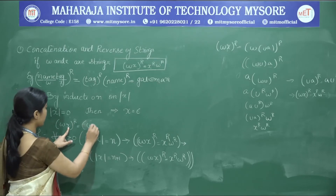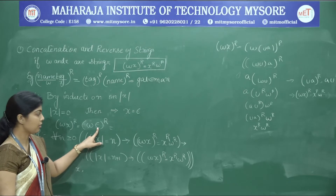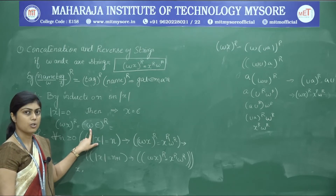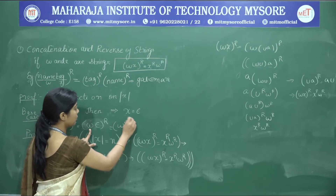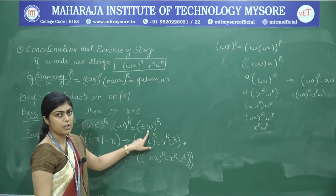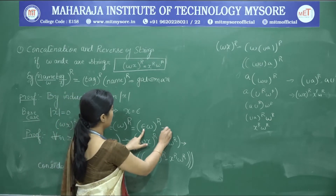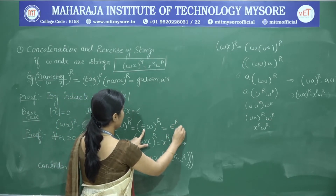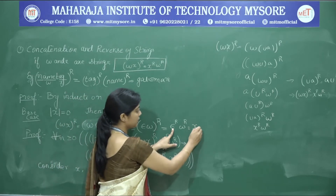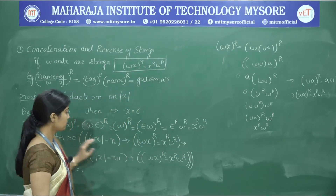Since x is epsilon, we write (w·ε)^R. We know epsilon is the identity of concatenation, so appending epsilon on either side does not change the original string. Therefore (w·ε)^R = w^R, which can also be written as (ε·w)^R = ε^R · w^R. Replacing ε by x gives x^R · w^R, completing the base case.